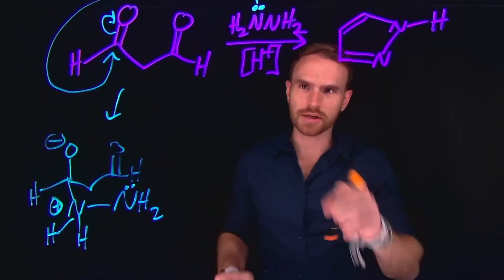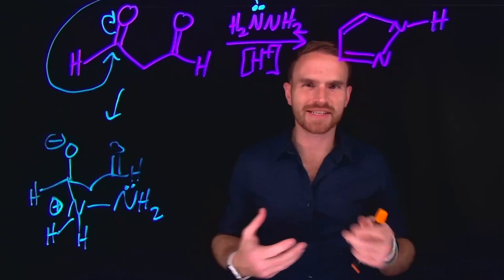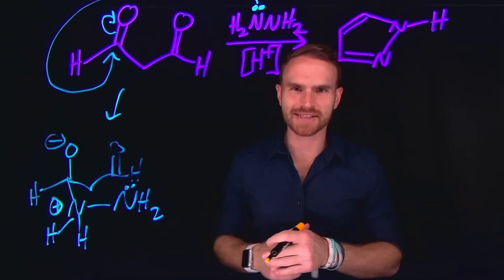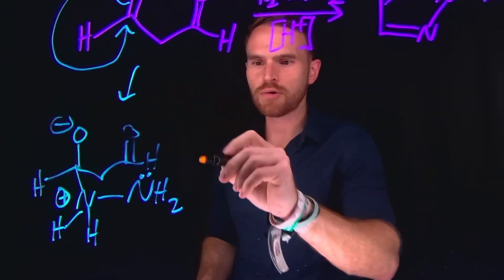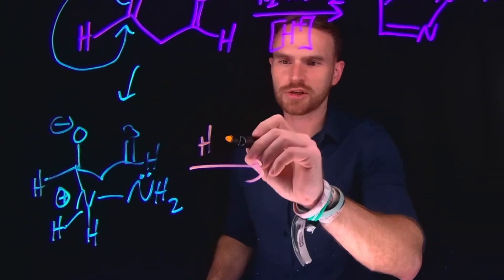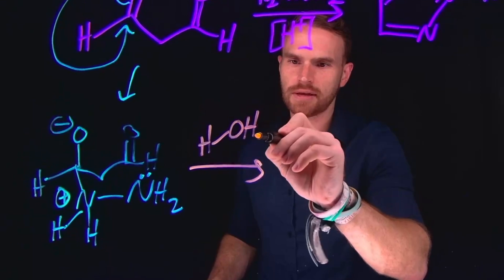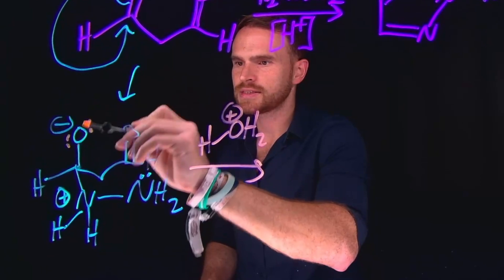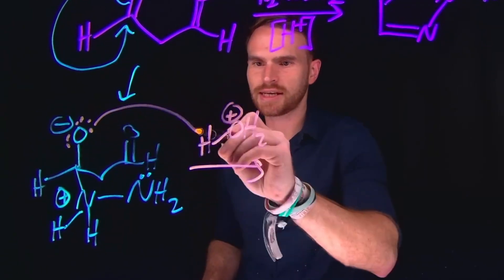Now importantly, you were told that you had a catalytic amount of acid. I think the example that I gave was sulfuric acid, but it could be any catalytic amount of acid. And that is going to allow us to protonate. So I'm just going to use H3O plus to represent our catalytic amount of acid.